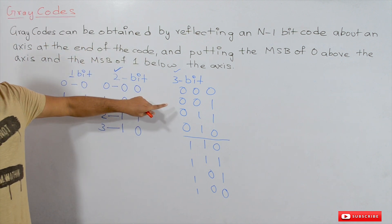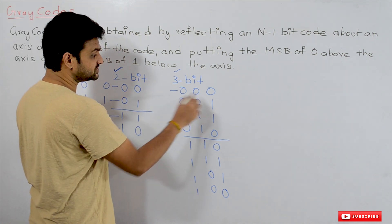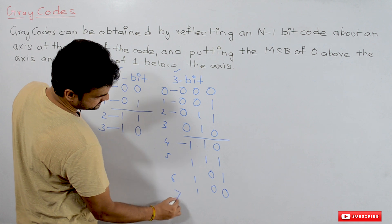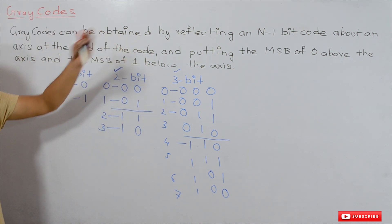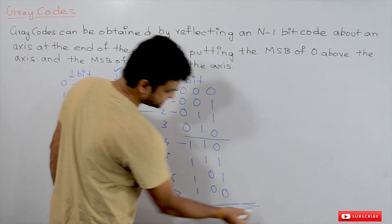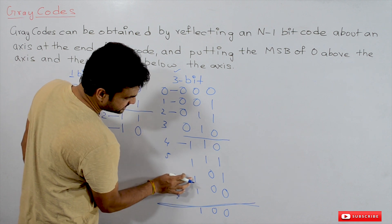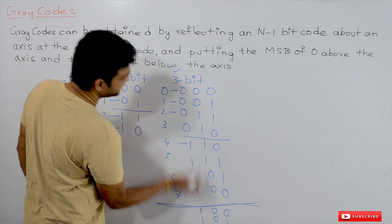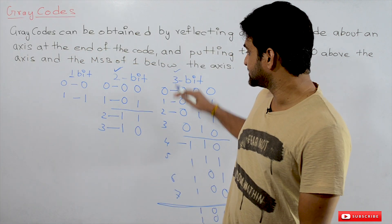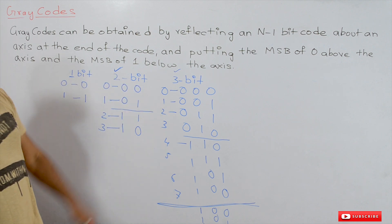To the reflected portion, we add MSB 0 above the axis — giving 000, 001, 011, 010 — and MSB 1 below the axis — giving 110, 111, 101, 100. These are the gray codes for three-bit numbers. Their decimal equivalents are 0, 1, 2, 3, 4, 5, 6, and 7. For the 4-bit representation, take the reflection of these 3-bit codes and add the appropriate MSB.